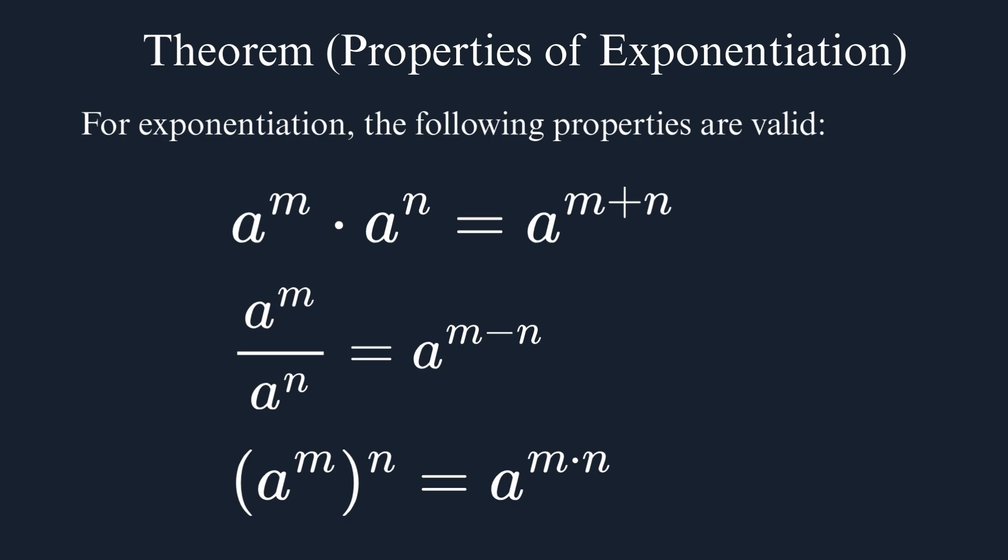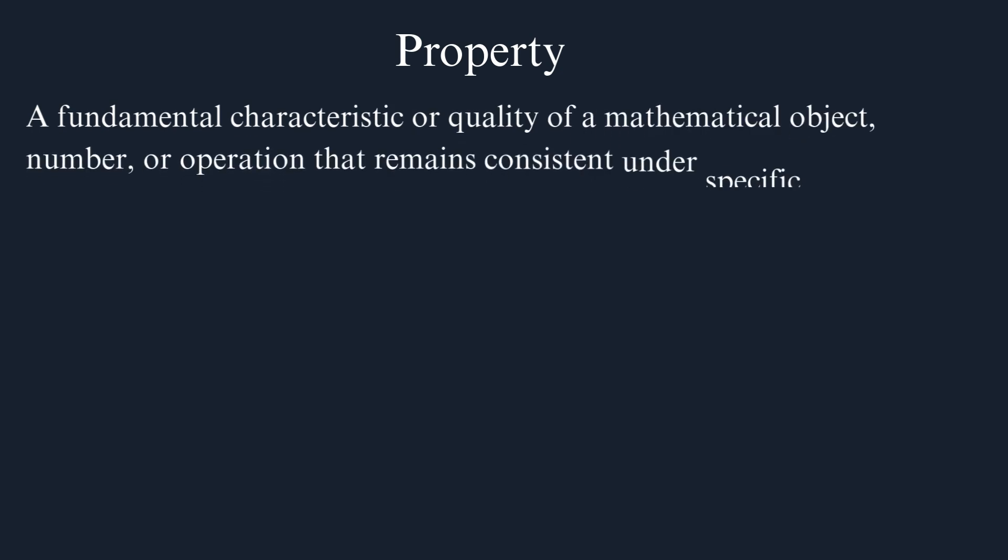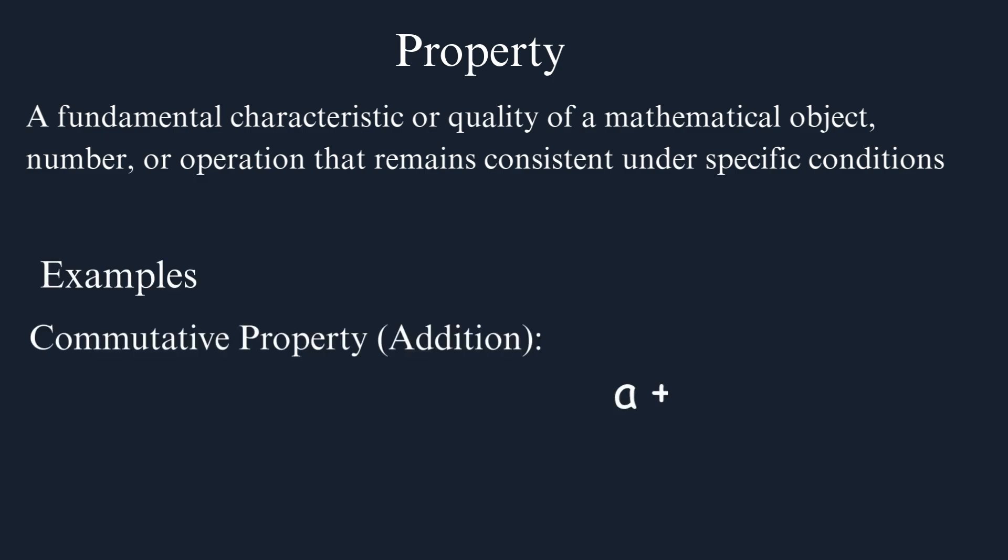Properties of exponentiation. Every property is a theorem. For exponentiation, the following properties are valid here, or some of them I didn't list all. All these properties have demonstrations. That is, you can prove each one of them. So why do we give it a different name? Why do we call it a property instead of a theorem? A property is a specific type of theorem. It's something that follows almost immediately from the definition. That is, you just need to apply the definition and a little logical reasoning to reach this conclusion, to reach this theorem. So we don't call it a theorem, we call it a property, reserving the name theorem for more relevant conclusions that are more difficult to find through demonstration.